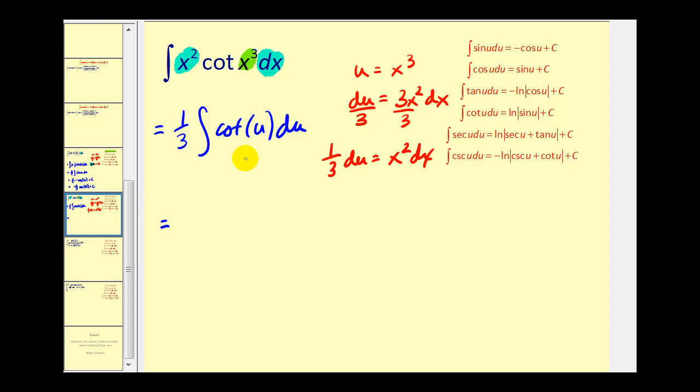Now we can apply our basic integral formula for cotangent u. We're going to have (1/3). Then we'll have natural log of the absolute value of sine u plus C.